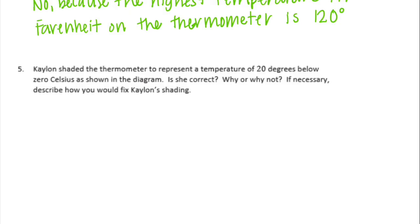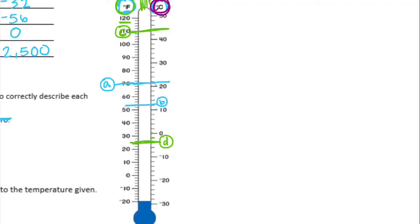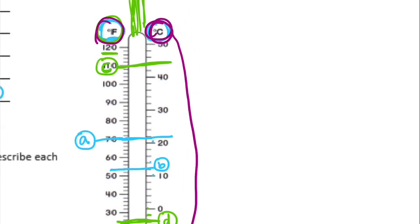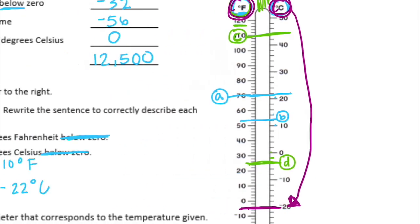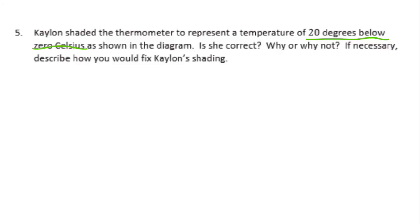Number five: Caitlin shaded the thermometer to represent a temperature of 20 degrees below zero Celsius. Is she correct, and why or why not? The correct shading for negative 20 degrees Celsius should be here on the Celsius side. However, what she shaded appears to be negative 20 degrees Fahrenheit — she shaded the Fahrenheit side instead of the Celsius side. So she is incorrect. It's very important to pay attention to which side and the labels on your thermometer.